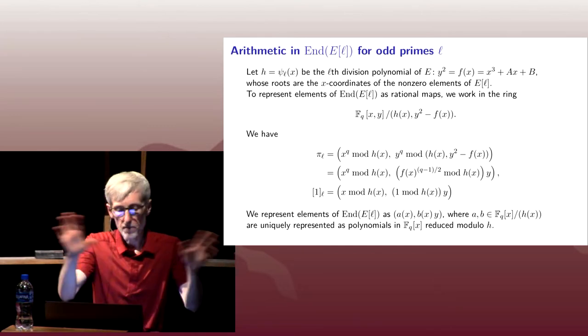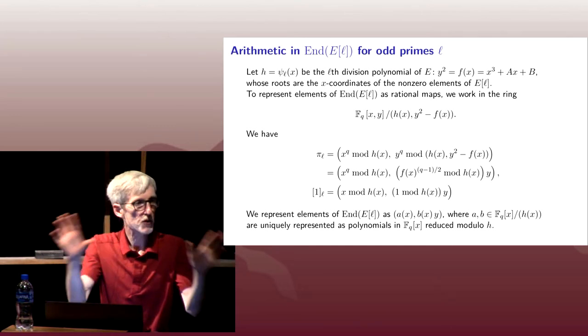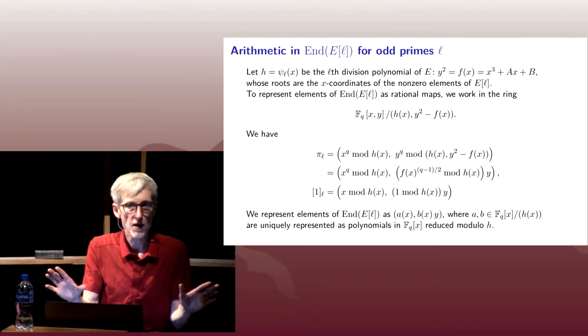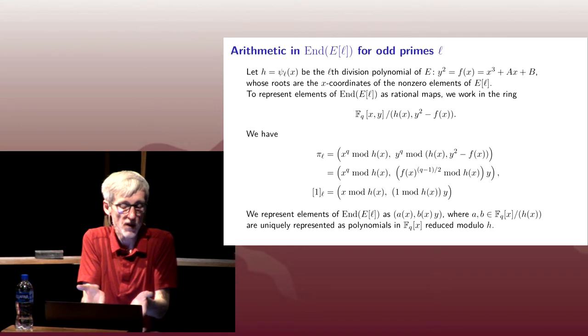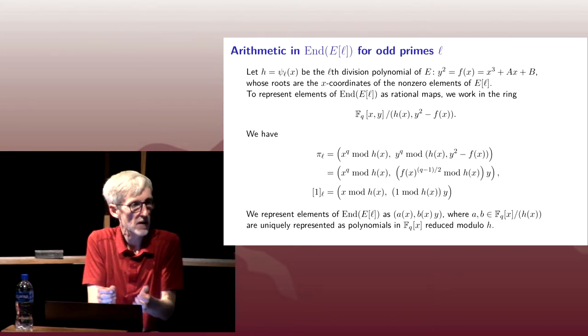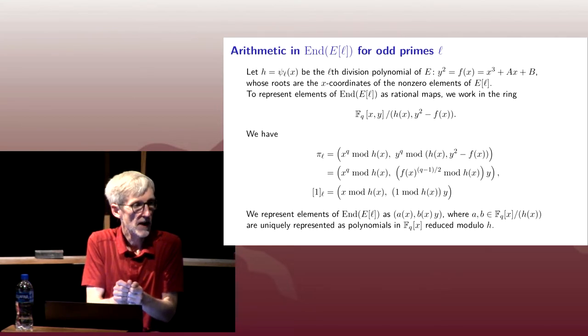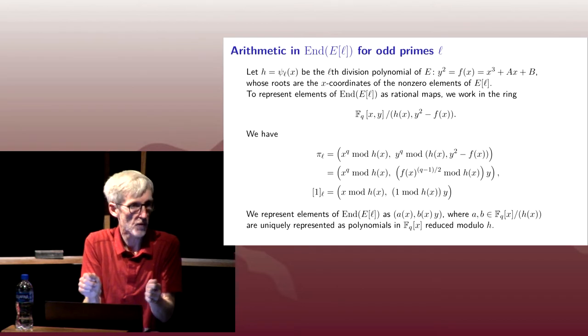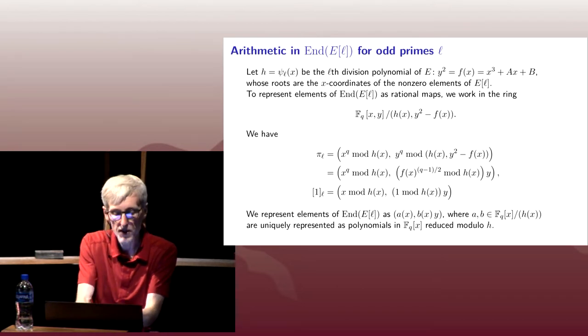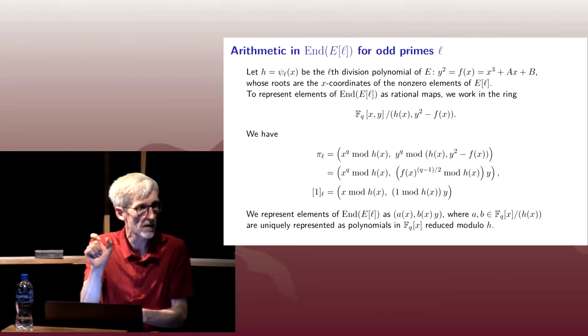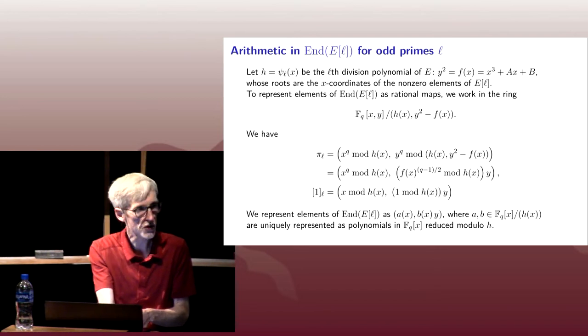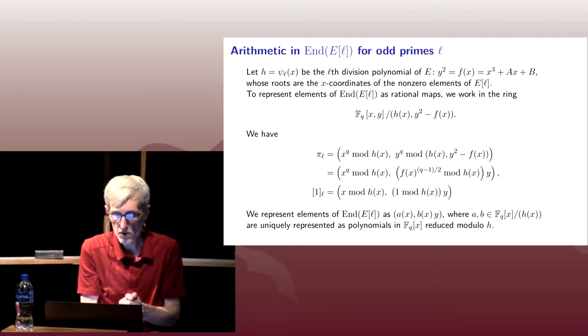Now you might worry about, are we sure that every endomorphism can be represented in this way? Well, we actually care about the subring generated by 1 and pi_L. And as long as we know how to add and multiply, perform the ring operations in our endomorphism ring, and I can show you how to do that and always get an answer out that's in the same form, some A(X), B(X)Y, we'll know that we can take this as our standard representation.